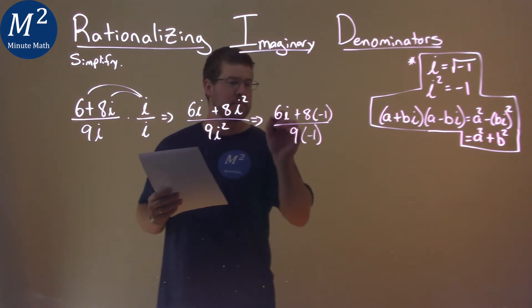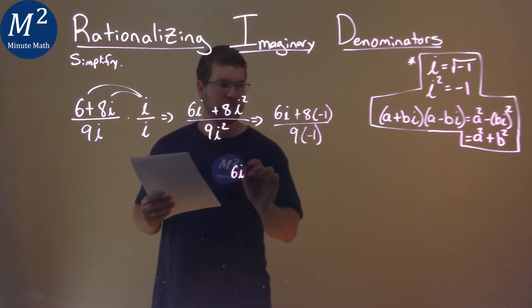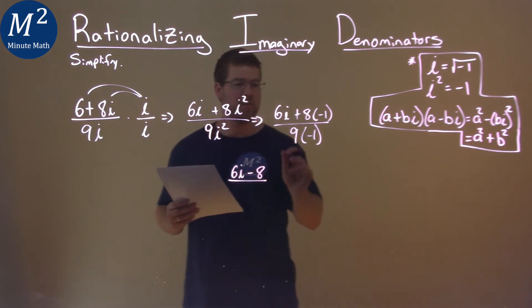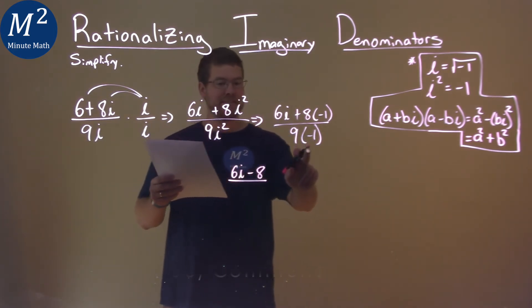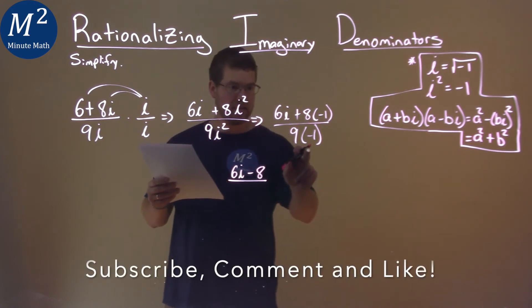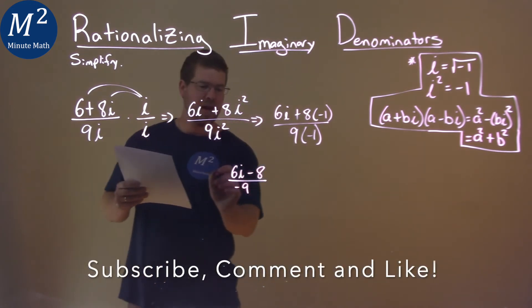Let's keep bringing it down. 6i stays where it is, and then 8 times negative 1 is minus 8. And then we have 9 times negative 1, which is negative 9. So we have negative 9 down here, and then negatives out front.